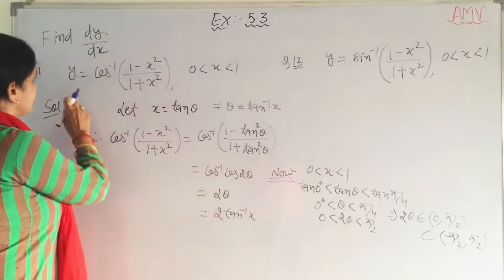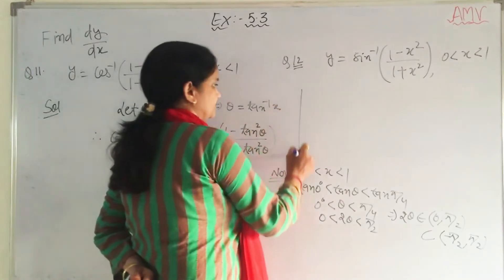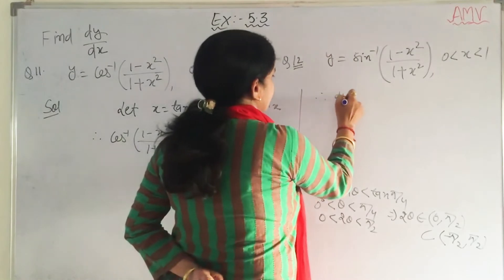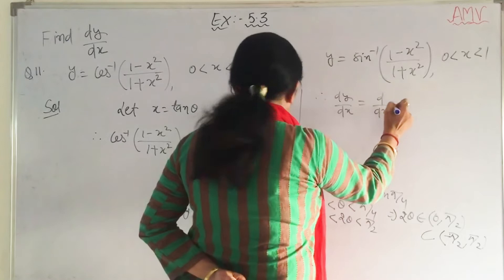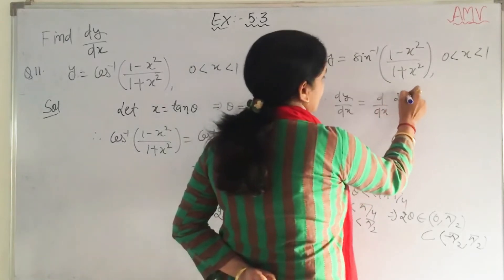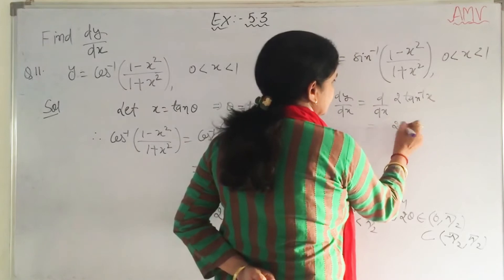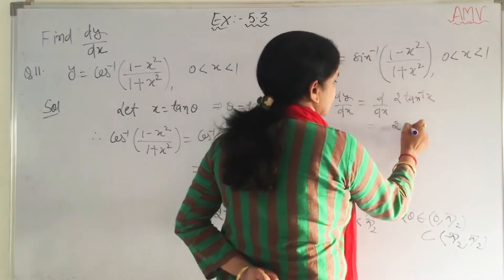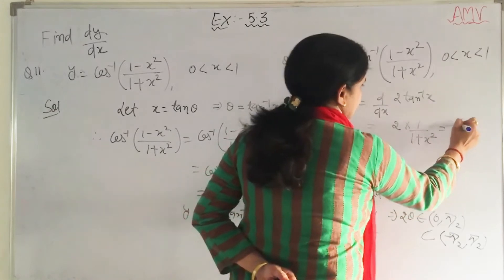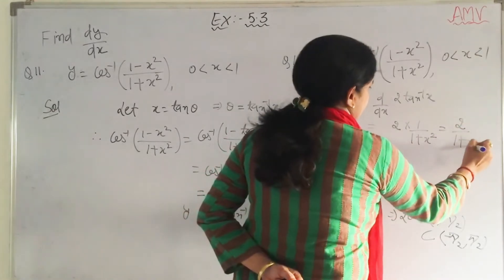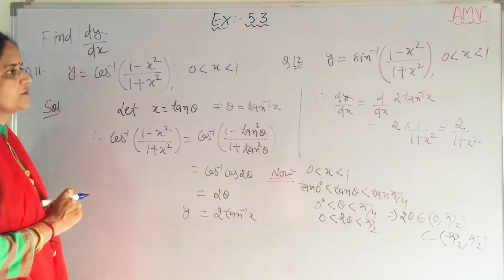So y equals 2 tan inverse x. We have to find the derivative. dy upon dx is d by dx of 2 tan inverse x. The derivative of tan inverse x is 1 by (1 plus x square). So the answer is 2 upon (1 plus x square). Write in your notebook.